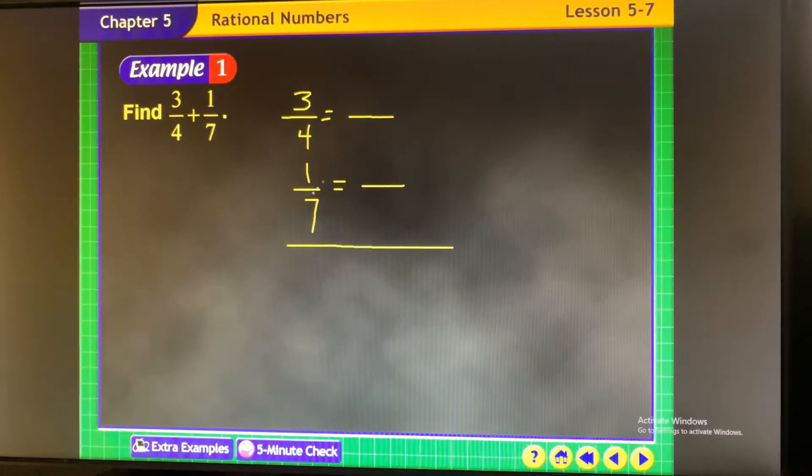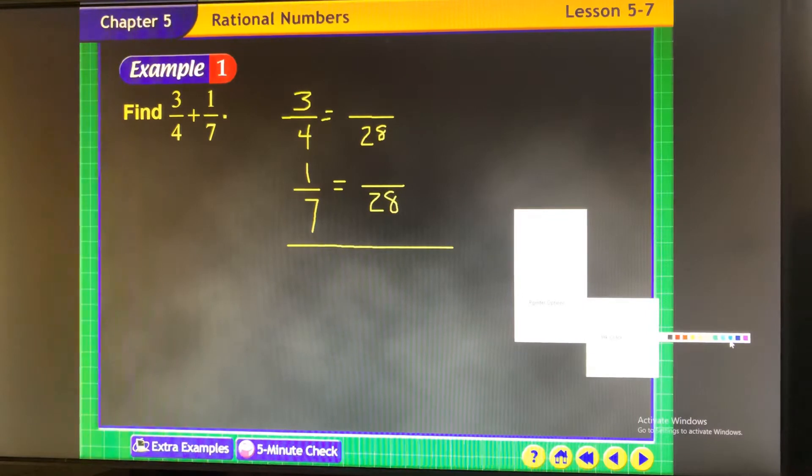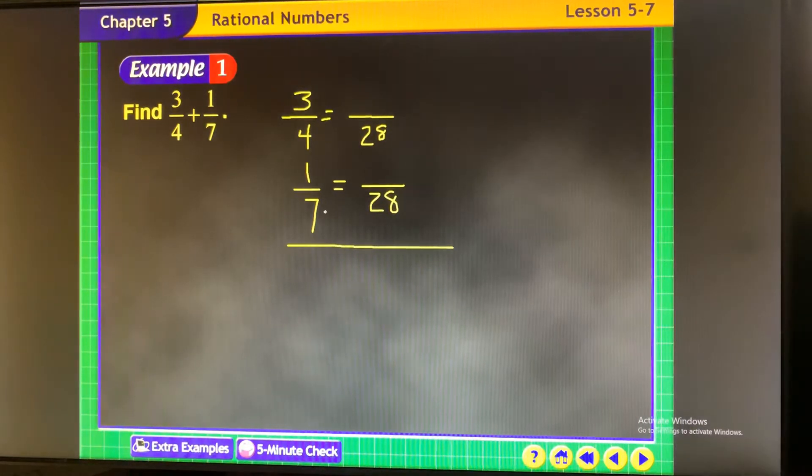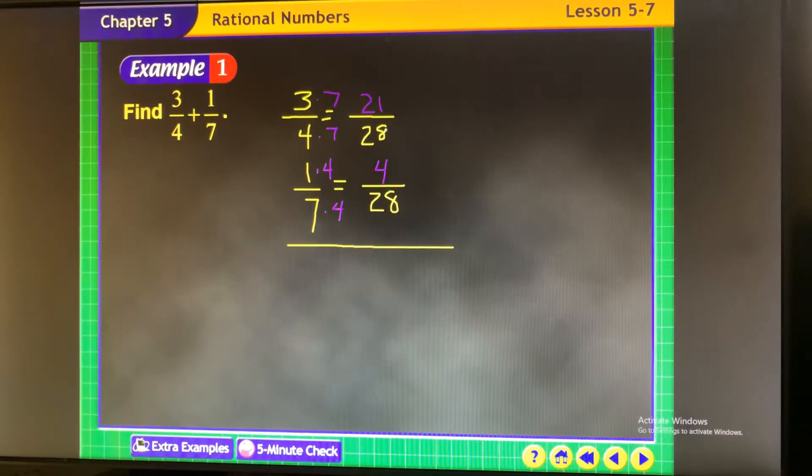The common denominator of 4 and 7, the smallest number that both of those numbers go into is 28. And then this is where you look at this and say, all right, 7 times what is 28? Times 4, so multiply the top by 4. 4 times 7 is 28, so multiply the top by 7. And I will have rewritten the fractions.